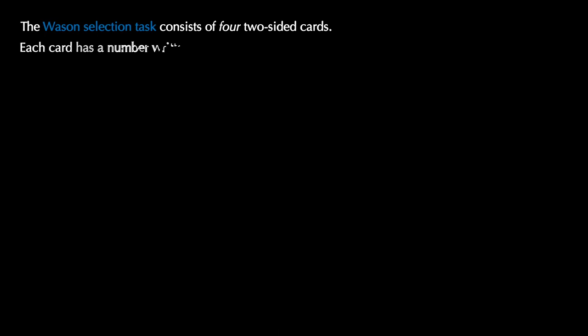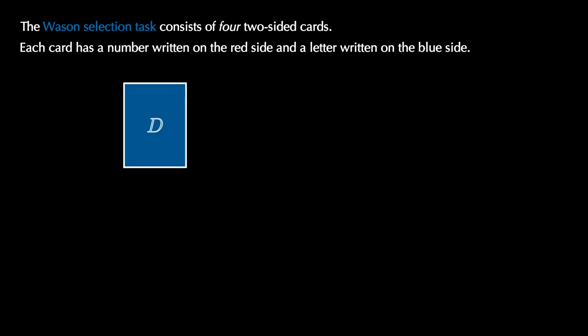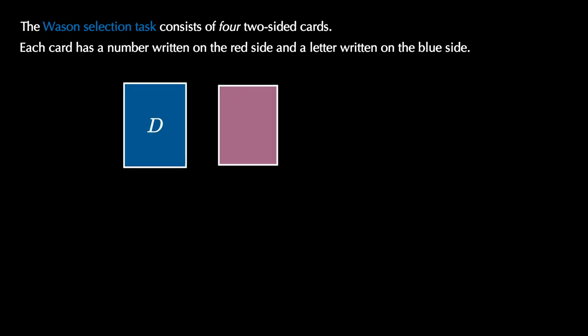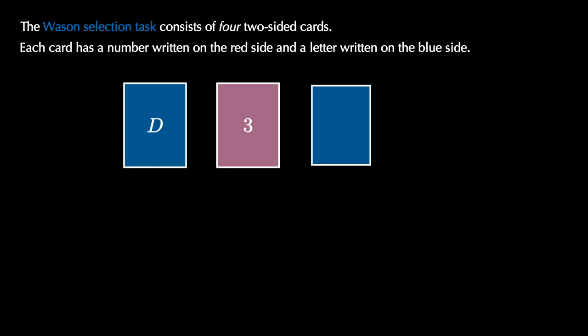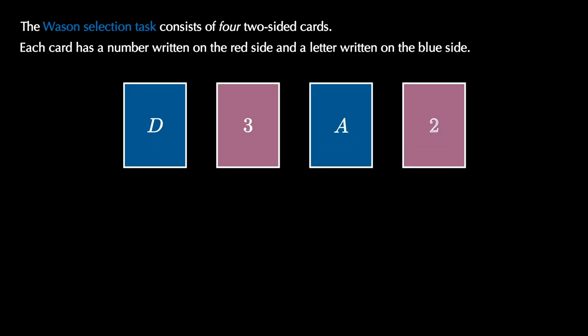The Wason selection task consists of four two-sided cards. Each card has a number written on one side, which will be red, and a letter written on the other side, which will be blue. We're looking at four cards with two blue sides and two red sides showing: D, 3, A, and 2.